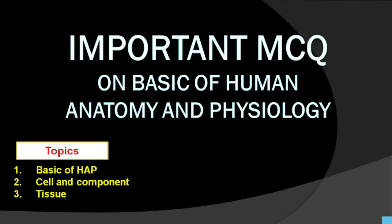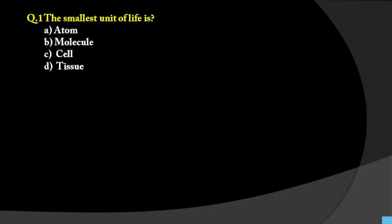The first question is: What is the smallest unit of life? Options are atom, molecule, cell, or tissue. When we studied basic life processes, it started from atom, then molecule, then cell, then tissue. But when asked about the smallest unit of life, the answer is cell.